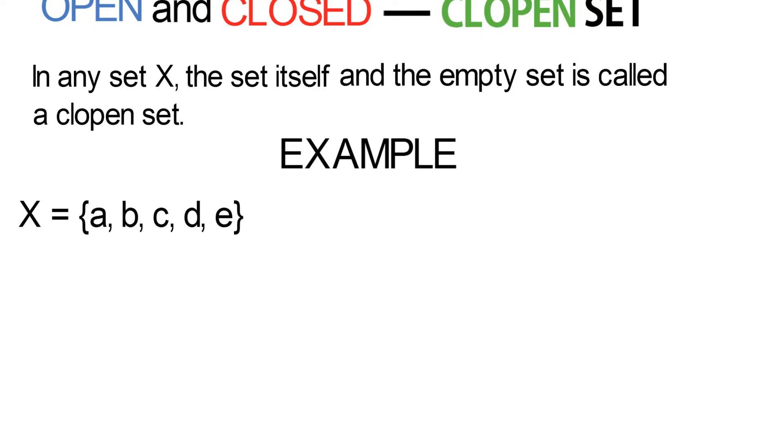So let X be equal to {a, b, c, d, e} and τ be equal to {∅, X, {c, d}, {a, b, e}}. You can verify this to see if it's a topology or not. But it is a topology. So we just forge ahead.